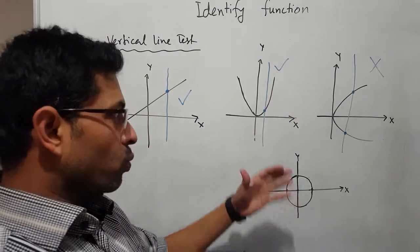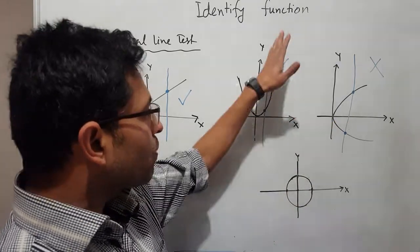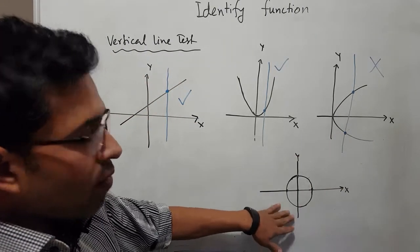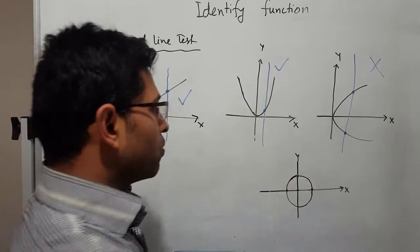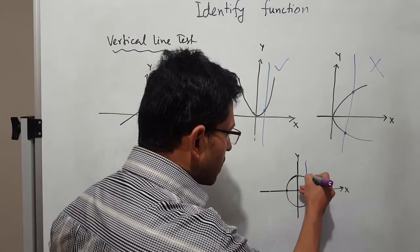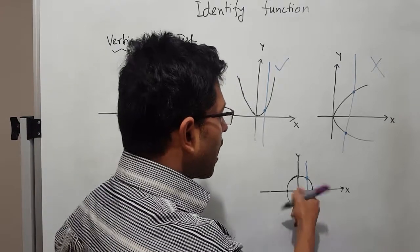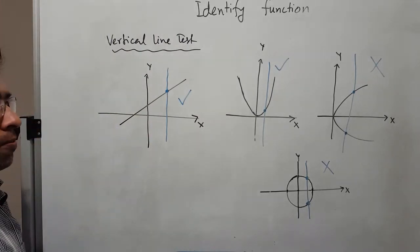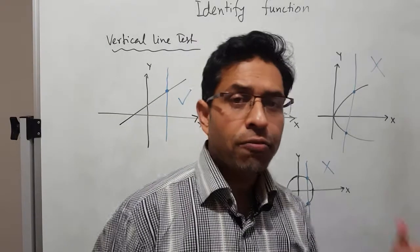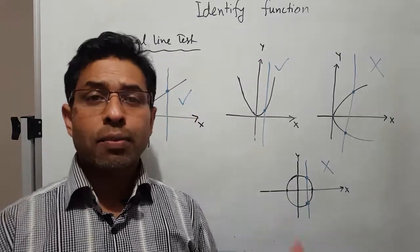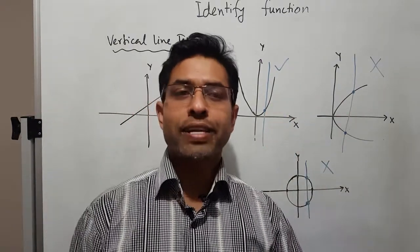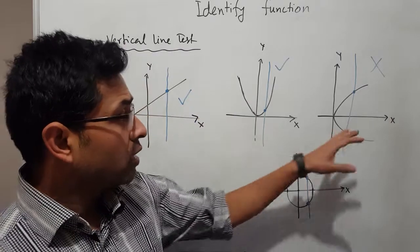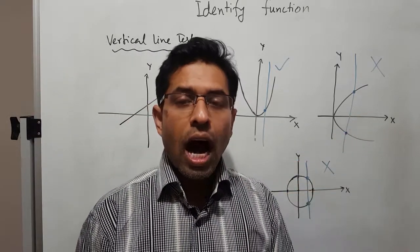The vertical line test tells you which graph is a function and which is not. A circle, no matter where it is positioned, will always be intersected at two different points by a vertical line, so a circle is not a function. When dealing with functions, we commonly encounter the terminologies domain and range.